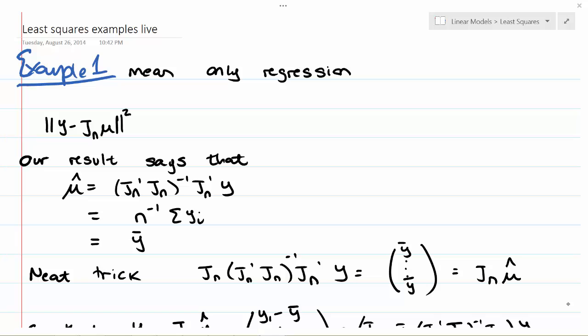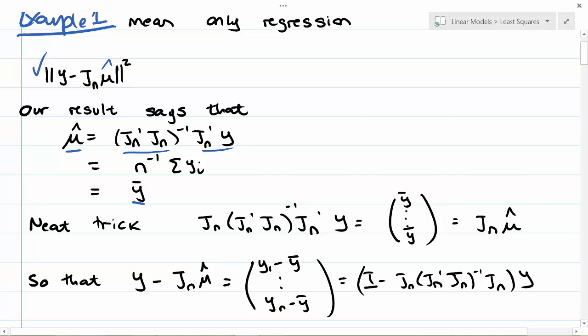Our least squares model is to approximate our vector in R^n with a constant multiplied times J_n, so it puts it into the right dimension. Our result says that the fitted parameter value is (J_n transpose J_n)^(-1), which is n^(-1), times J_n transpose y, which is the sum of the y's. So we get y-bar.